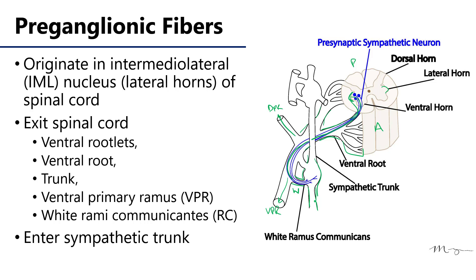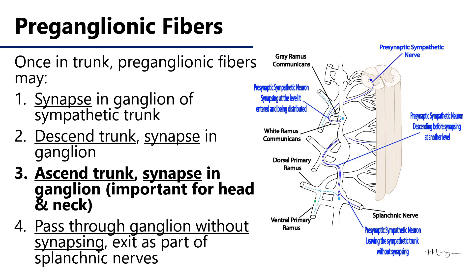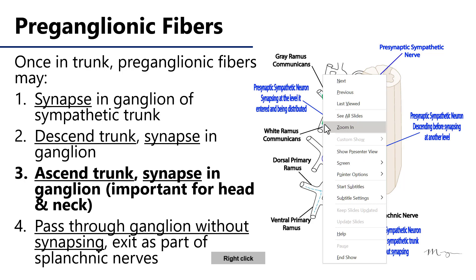Once those fibers get into the trunk they may do several different things. To recap the route: we start in the IML, exit the spinal cord via the ventral rootlets, through the ventral root, through the trunk of the spinal nerve, through the ventral primary ramus, out the white ramus communicants, and into the sympathetic trunk. The first option is that the pre-ganglionic sympathetic fiber can synapse there. Once it synapses we have a post-ganglionic fiber which exits the trunk via a gray ramus communicants, goes back to the ventral primary ramus of the spinal nerve, and can distribute itself through either the dorsal or ventral primary ramus.